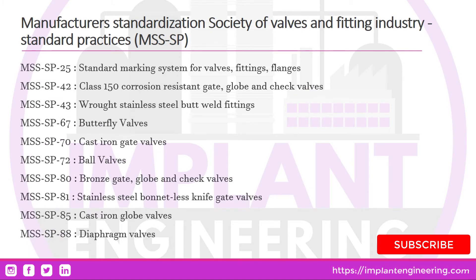Another American standard is MSS SP — Manufacturer's Standardization Society Standard Practices. This type of standard is particularly used for the designing, construction, inspection and testing of valves and fittings. Some of the most popularly used MSS SP standards are MSS SP-25, the standard marking system for valves, fittings and flanges, and MSS SP-42 for class 150 corrosion-resistant gate, globe and check valves, and so on.